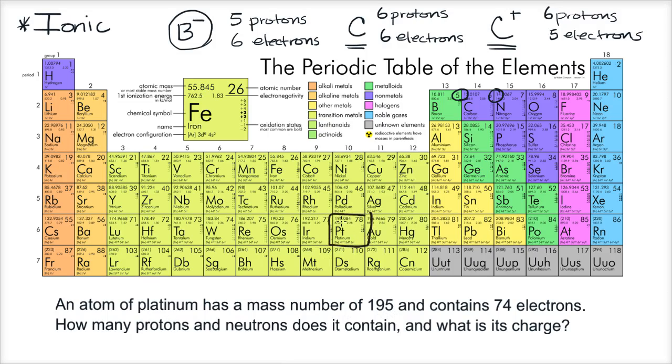And 195 looks pretty close to that atomic mass we have listed there. And it contains 74 electrons. How many protons and neutrons does it contain, and what is its charge?